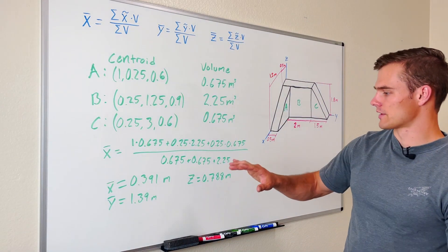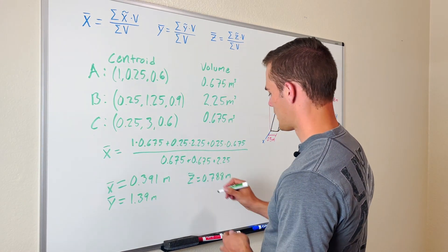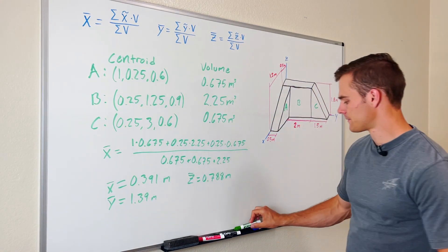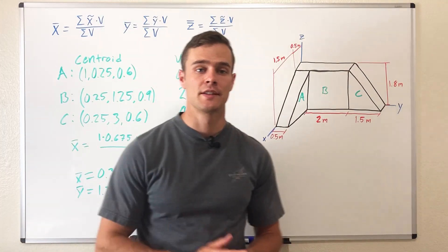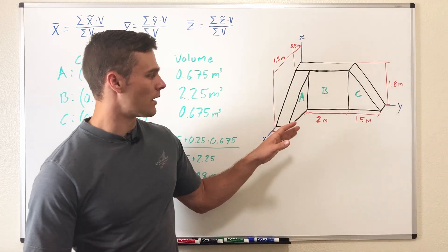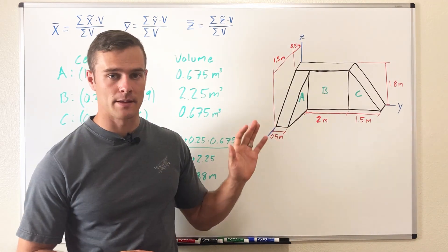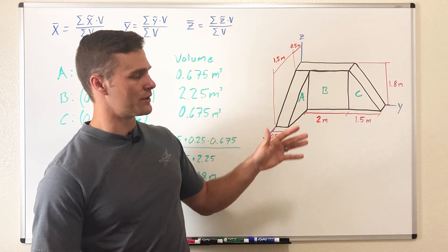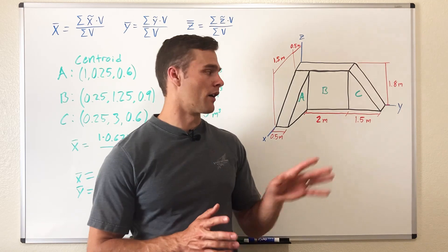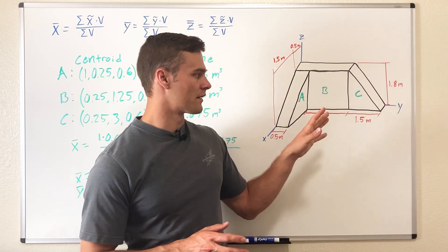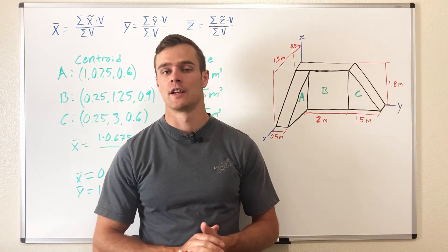So those are the x, y, and z coordinates of the centroid of the entire object. This is a good example problem where the 3D object is homogeneous — in other words, has the same density throughout. If you want an example problem where the components are not all the same density, you can click on the video link and that will take you to another example problem video.